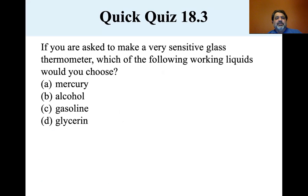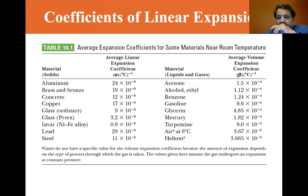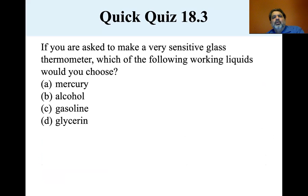If you're asked to make a very sensitive glass thermometer, which of the following working liquid would you choose? And so you go back to the volume expansion here and look which one has the highest, and the highest is gasoline, the 9.6. The 9.6 is greater than the 4.85. Those are all above air and helium. Those are all 10 to the minus 4. So gasoline has the highest average volume expansion coefficient. So let's get back to the question. If you were asked to make a very sensitive glass thermometer, where the material inside would move with the small changes of temperature, you would choose gasoline because it has the highest volume of expansion. It might be dangerous to use, but it would give you a very sensitive glass thermometer.